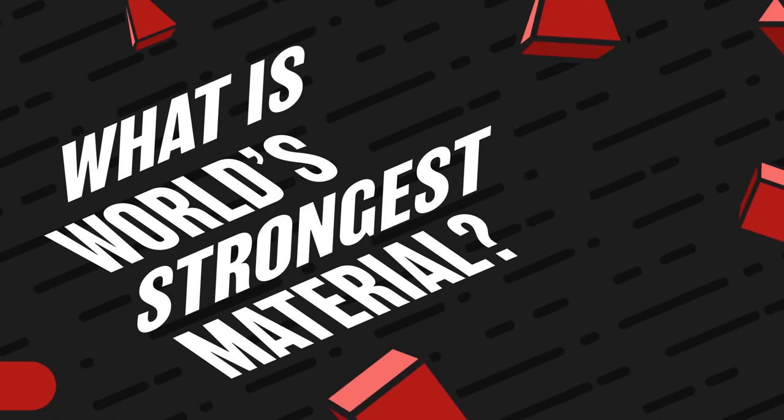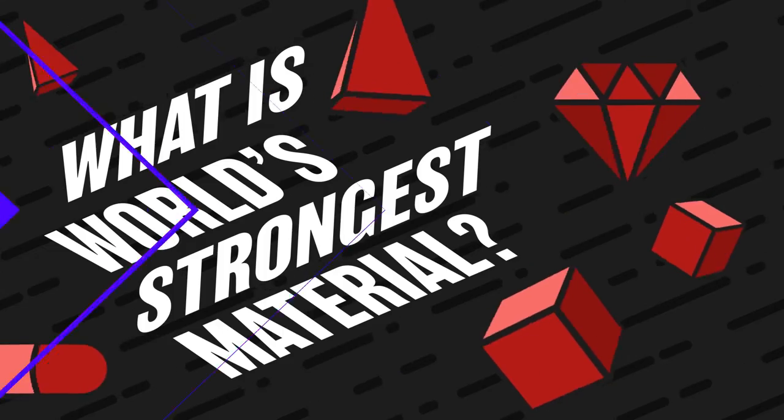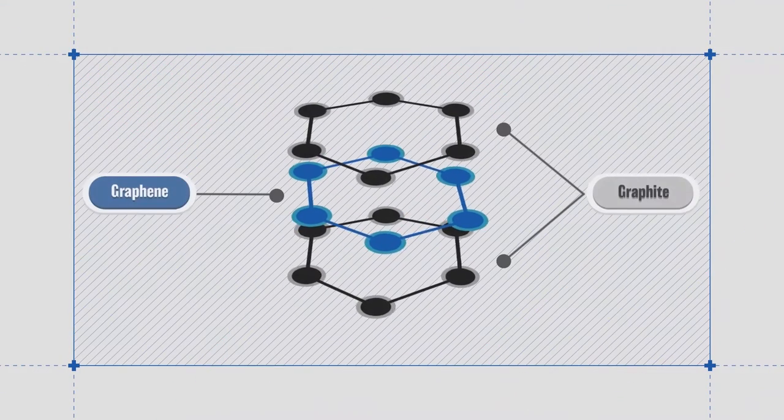What is the world's strongest material? It is graphene, a single thin layer of graphite.